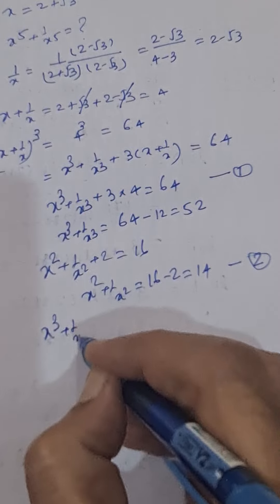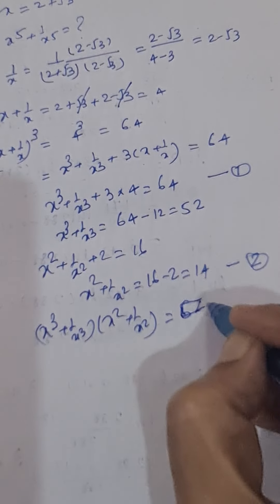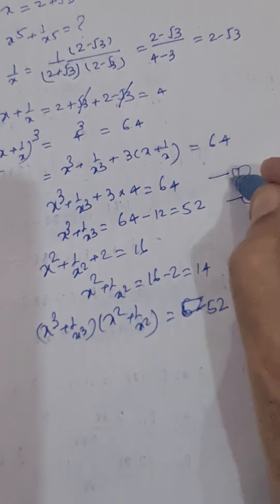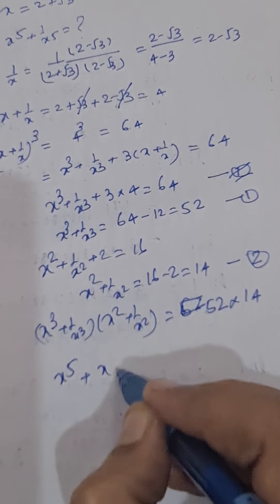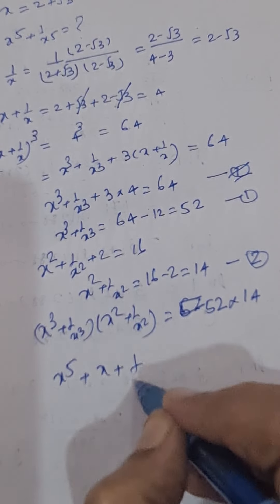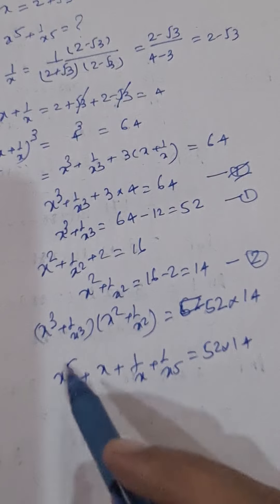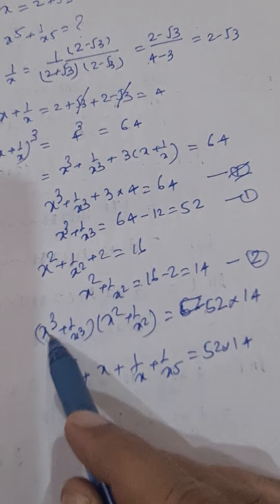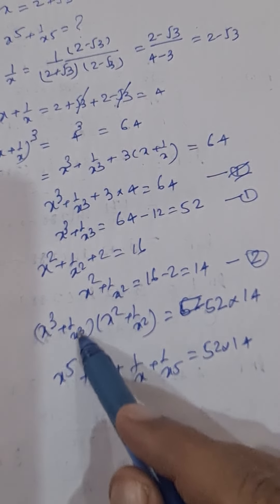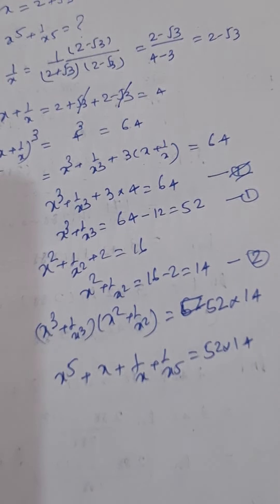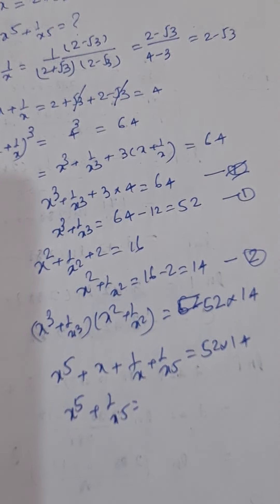We multiply equation 1 and equation 2, so we get x cube plus 1 upon x cube, multiplied by x square plus 1 upon x square, equal to 52 into 14. Expanding: x cube times x square gives x to the power 5; x cube times 1 upon x square gives x; 1 upon x cube times x square gives 1 upon x; and 1 upon x cube times 1 upon x square gives 1 upon x to the power 5. So this gives x to the power 5 plus 1 upon x to the power 5 plus x plus 1 upon x equal to 52 into 14.